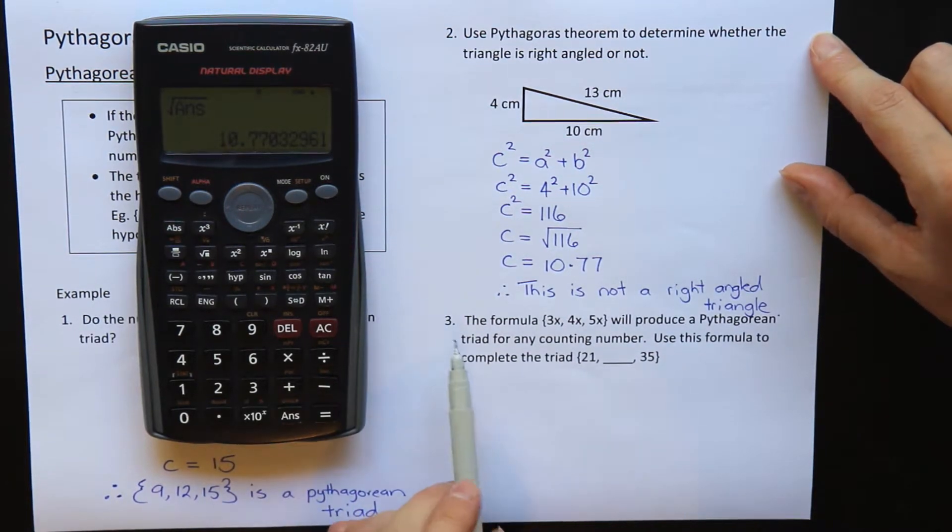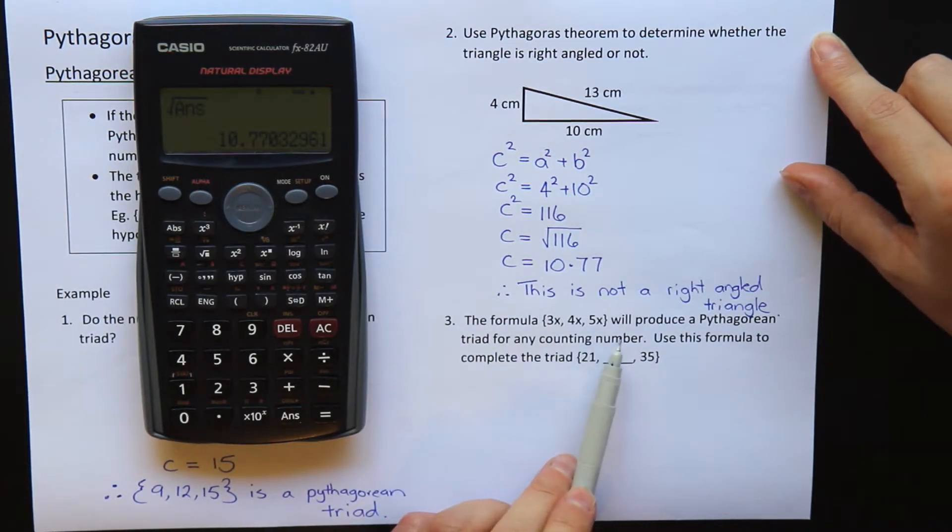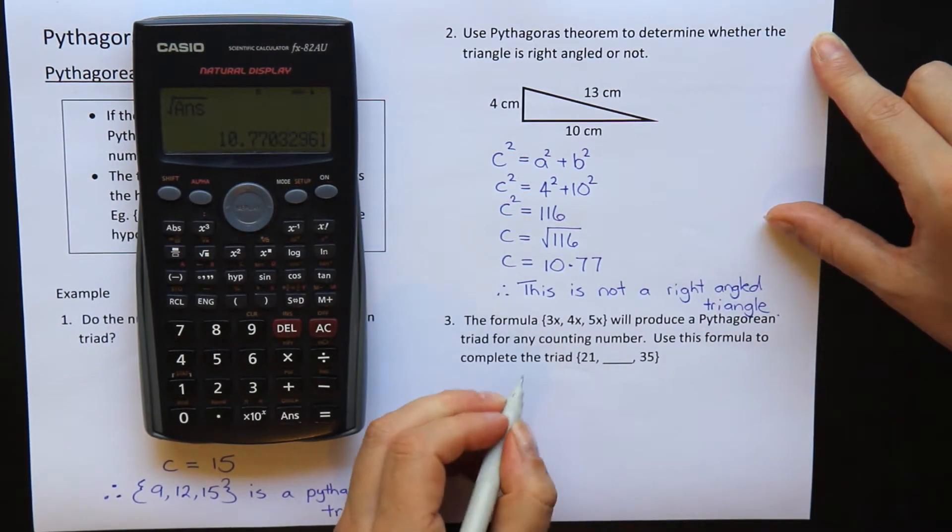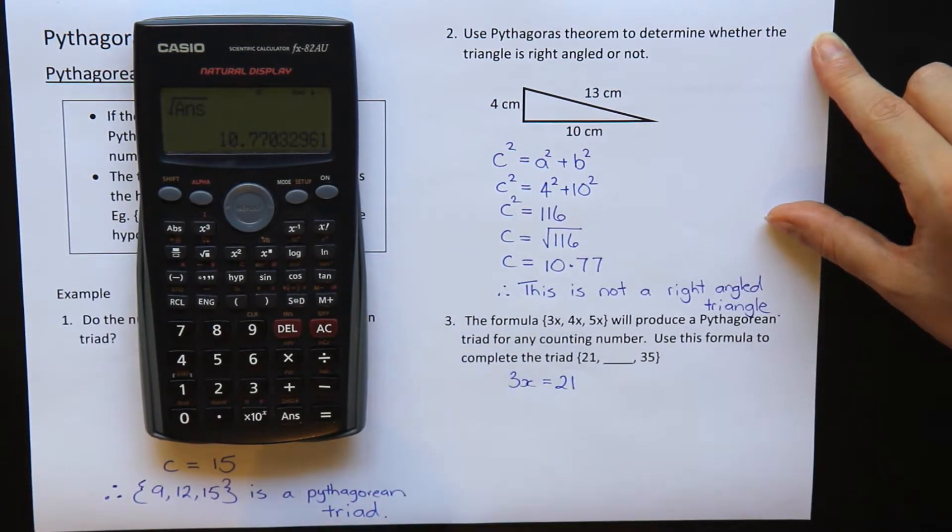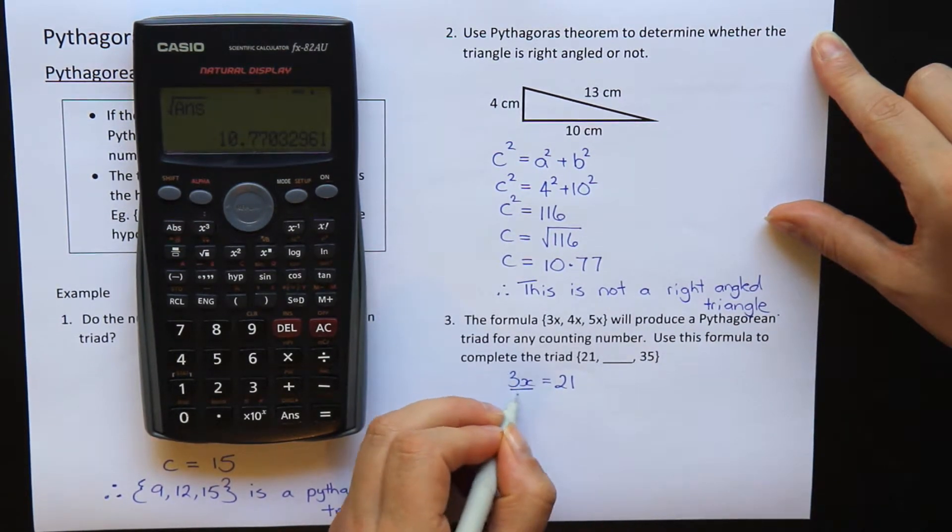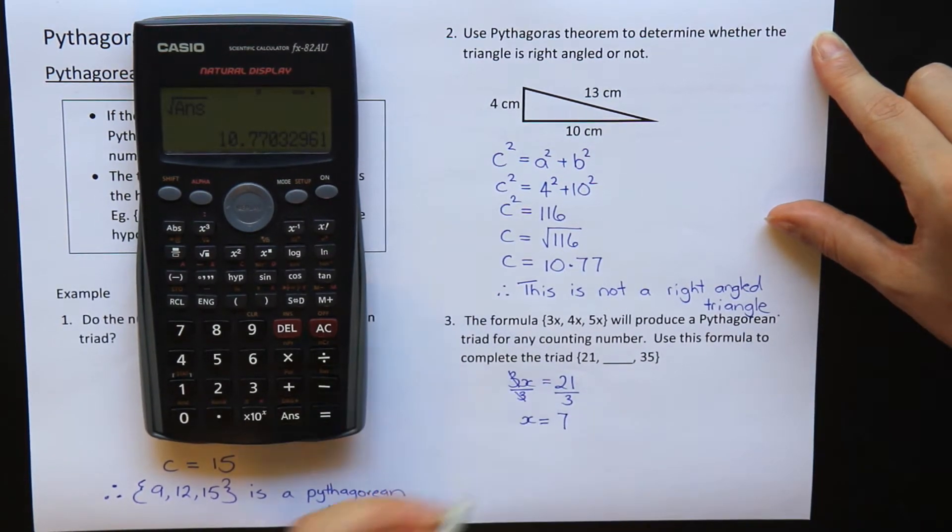I'll write one more question here. Number 3. The formula 3x, 4x and 5x will produce a Pythagorean triad for any counting number. We want to use this formula to complete the triad 21, missing number here, 35. Well, the 21 is in the position of the 3x, so that means that 3x has to be equal to 21. Okay, if I solve that little equation, I will divide the 3. Okay, and that will tell me that x is equal to 7.